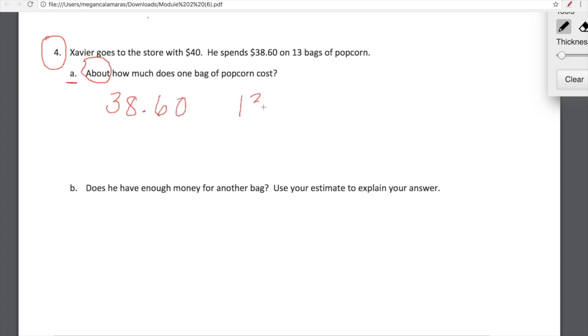I love this word about because this is like the gray area, right? It's about. So let's think about, about how much does one bag of popcorn cost? So he spends $38.60 on 13 bags of popcorn. I'm going to round $38.60 to 39 and I'm going to round 13 to 10 because this is lesson 25 and we're rounding and using estimation. From here all we have to do is divide 39 by 10.